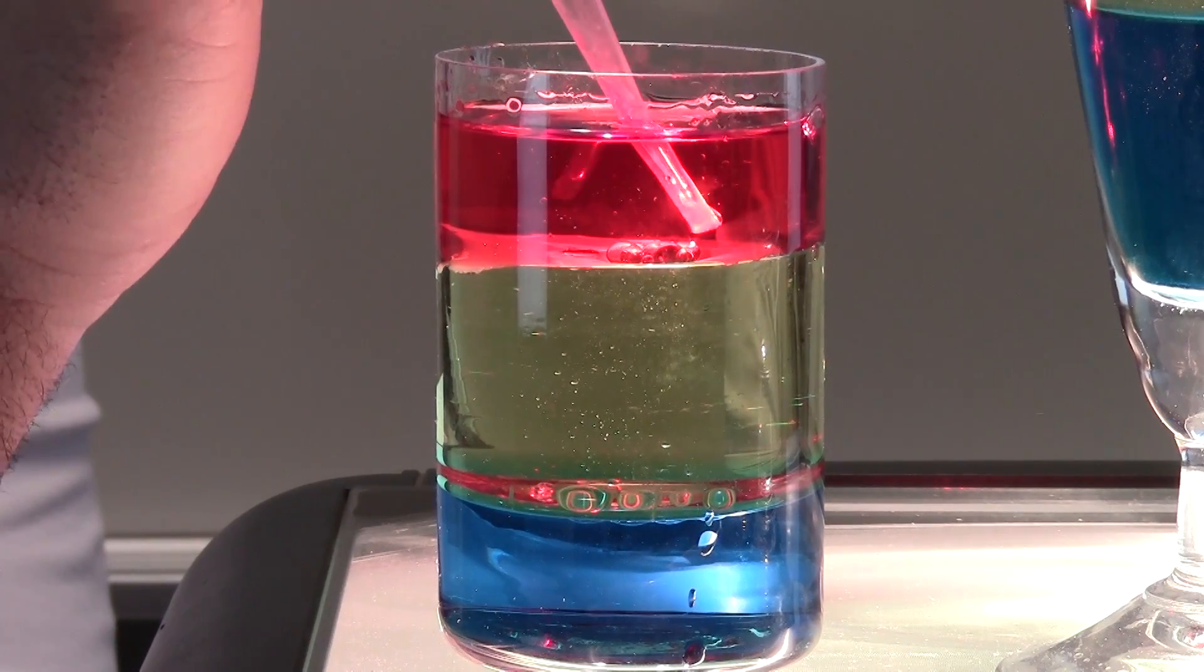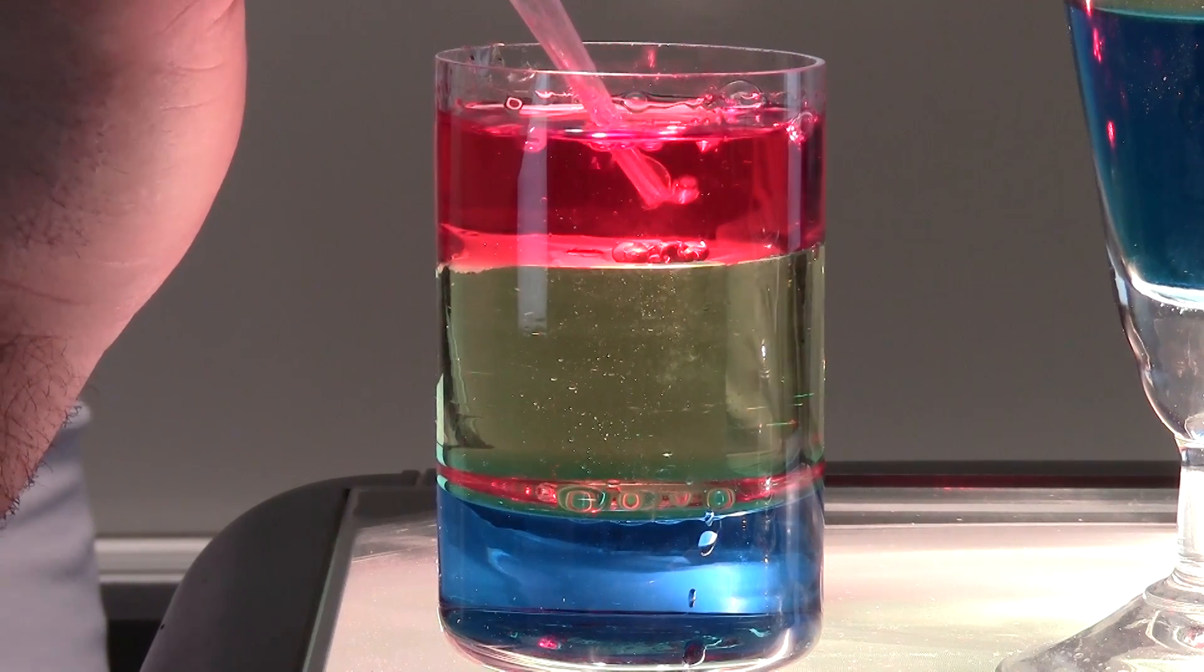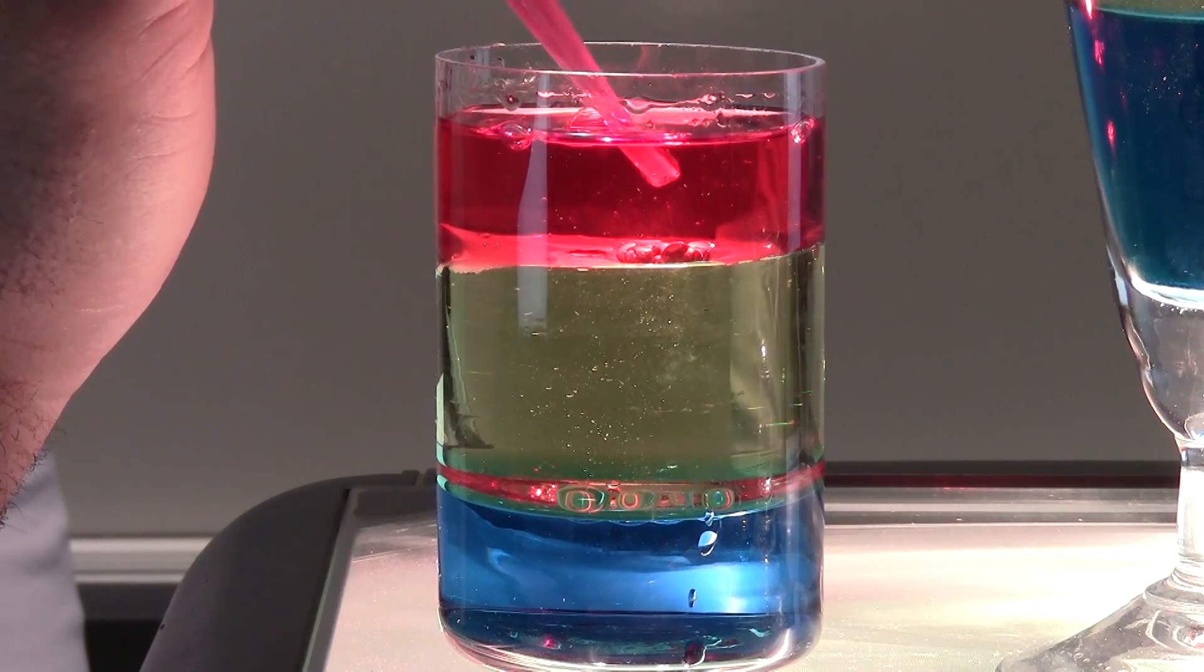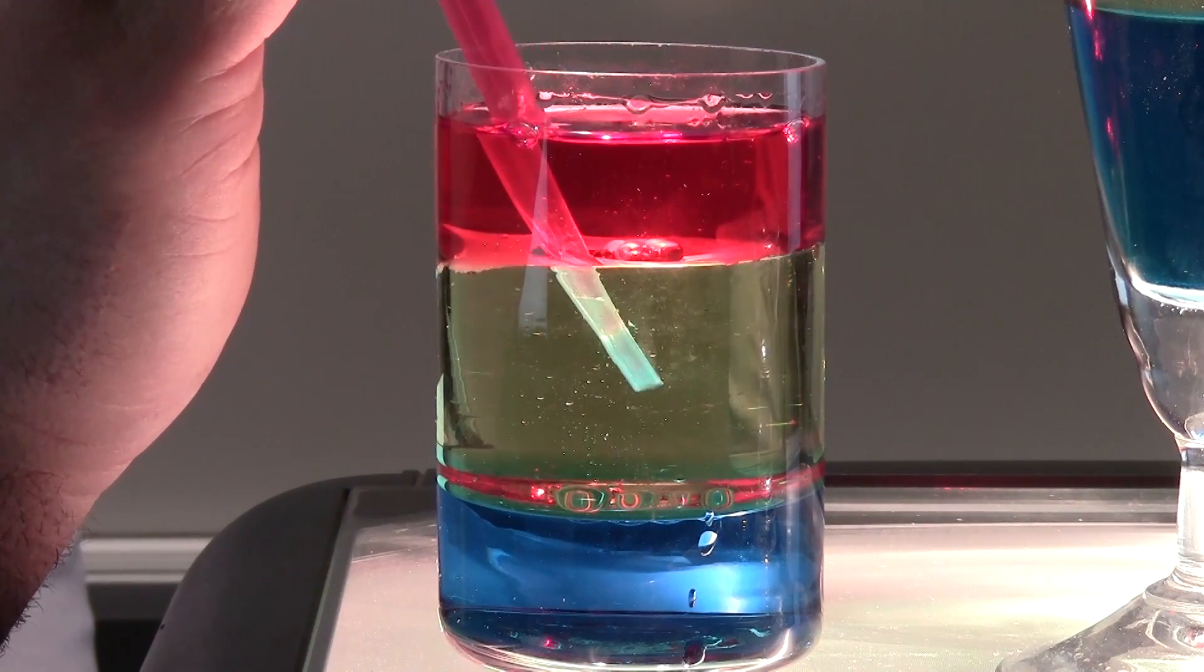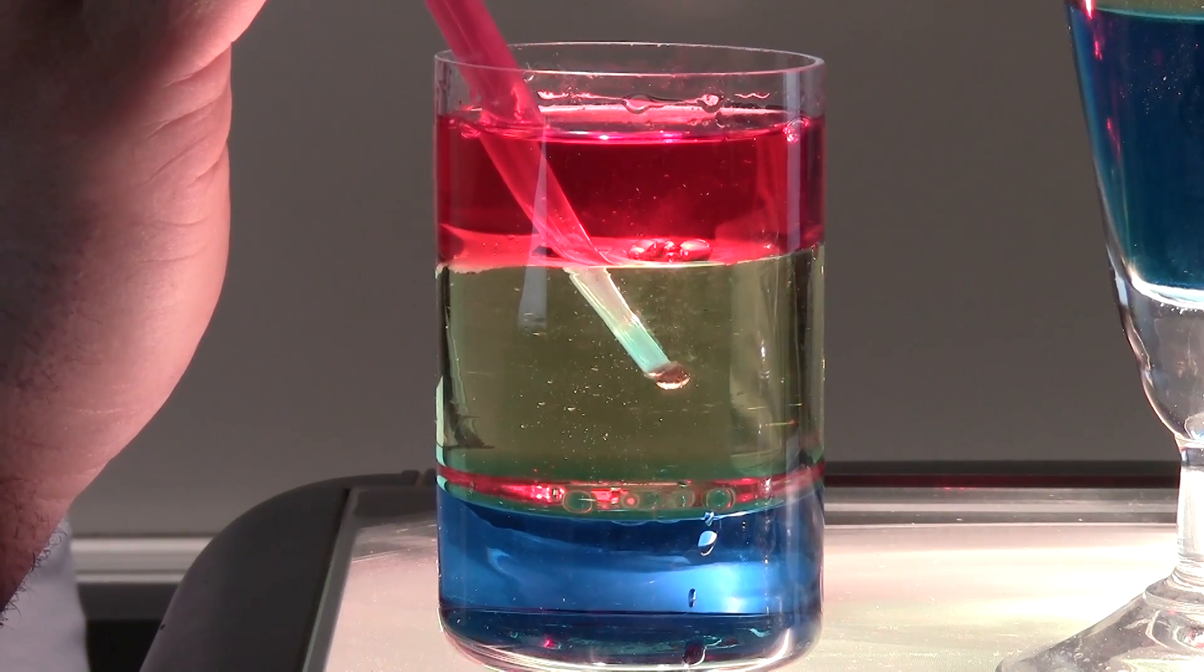Here we go with my eyedropper. You see the air again is floating to the top. It must not be as thick or dense. Let us take the red down into the yellow. What do you think is going to happen? Let us test it and find out.